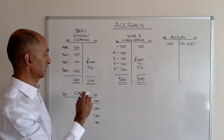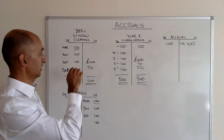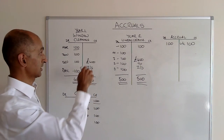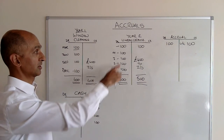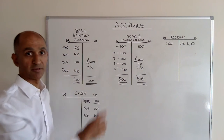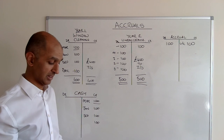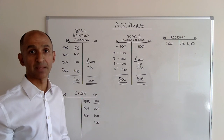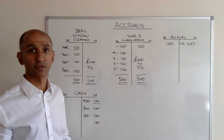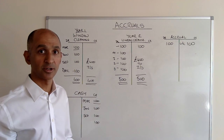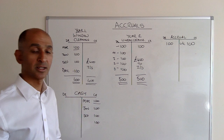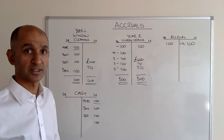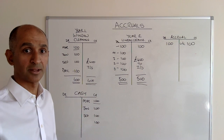If we didn't do that accrual, this would have been 300 and this would have been 500, and that would have been a misstatement of the actual true costs incurred during the year. I hope that's a useful example for you. Thank you.